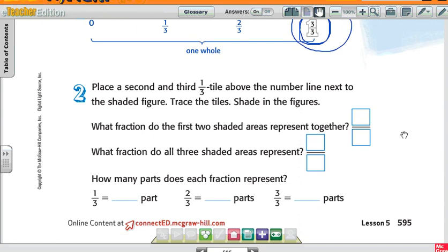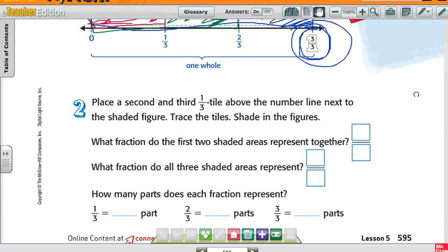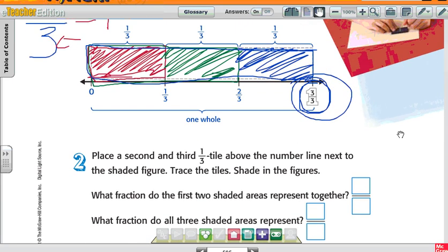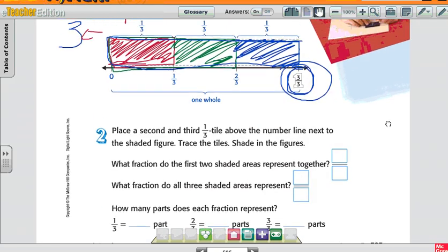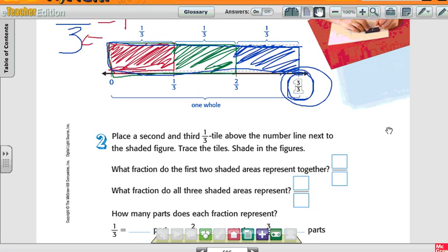It says, place a second and a third tile above the number line next to the shaded figure. Trace the tiles, shade in the figures. And we did that already. So, if I have two of them that are shaded in, what fraction do the first two shaded areas represent together? With it, the two shaded areas, how many did I shade together? Two of them. And how many total? How many sizes are there total?